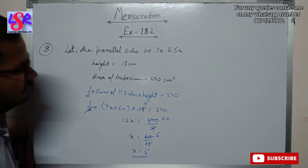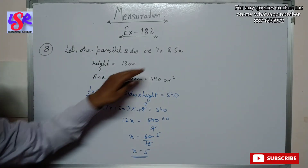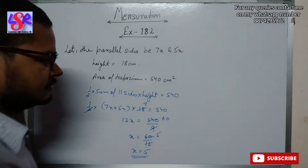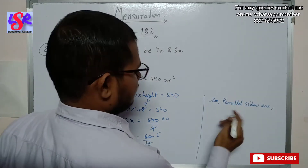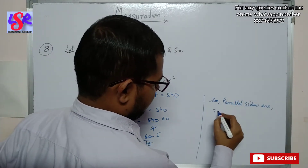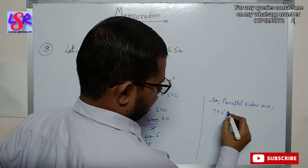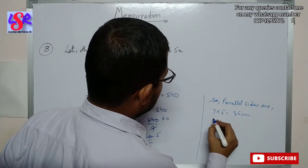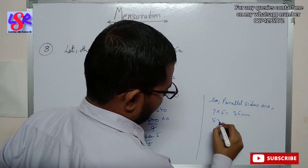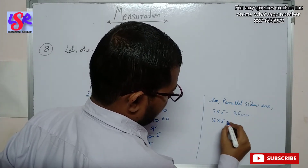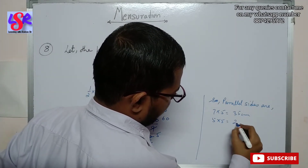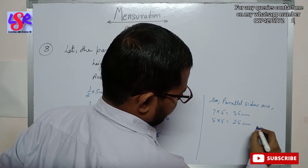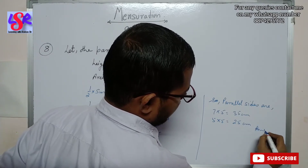With x = 5, we can find the lengths of the parallel sides. The parallel sides are 7 × 5 = 35 centimeters and 5 × 5 = 25 centimeters as the answer.